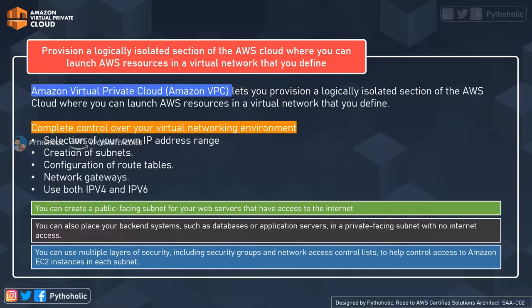Amazon VPC is an on-demand pool of shared computing resources that can be customized as per your own requirement and which is allocated within the AWS cloud environment. Everything you know about virtual private clouds remains the same but shifted to the AWS infrastructure. AWS in the form of VPC is going to provide you an isolated environment to securely host your applications and services. Amazon VPC lets you provision a logically isolated section of the AWS cloud where you can launch AWS resources in a virtual network that you define. So here we are going to define the VPC and AWS is going to provide us with the resources.